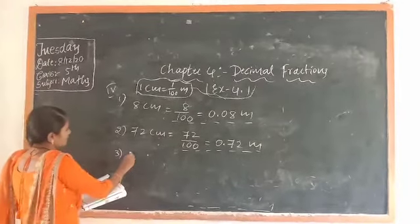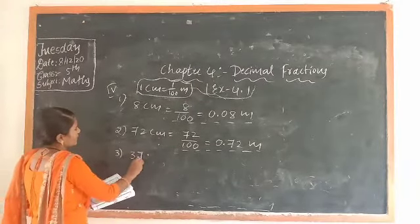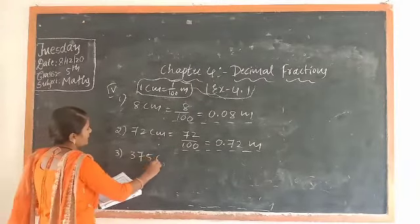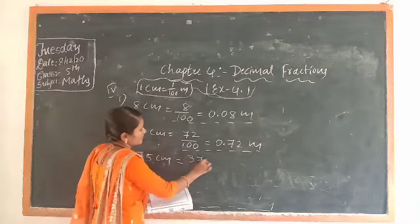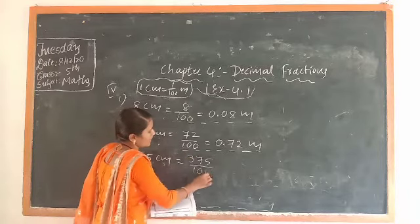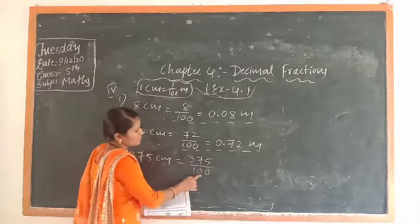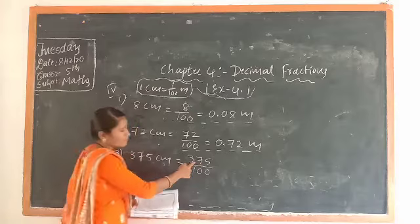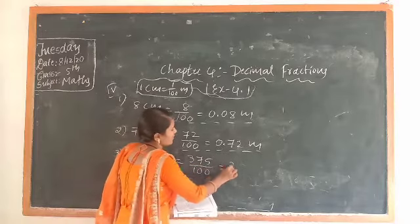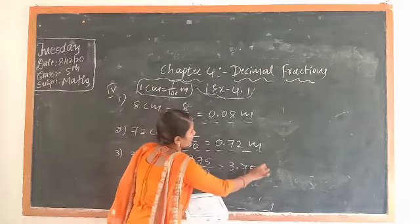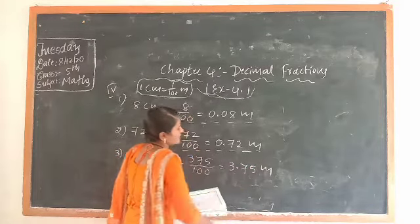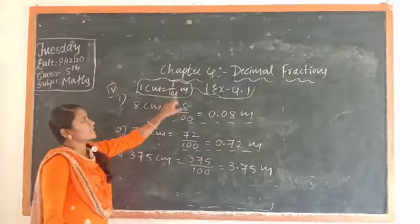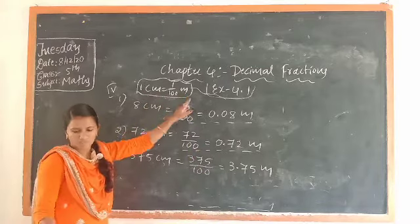Next, the third question: 375 centimeter. You have to write 375/100. Here, two digits after the point, so the value is 3.75 meter. That is the conversion of centimeter to meter.